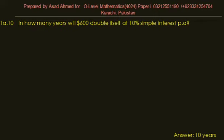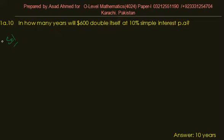Exercise 1.10: In how many years will $600 double itself at 10% simple interest per annum? It means if we deposit $600, in how many years will it double if the rate of interest is 10% per annum? We use the simple formula: I = PRT / 100.